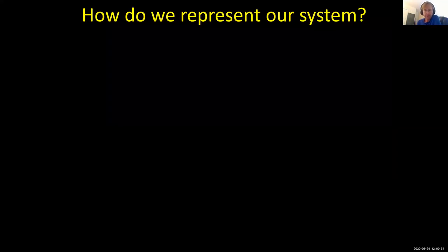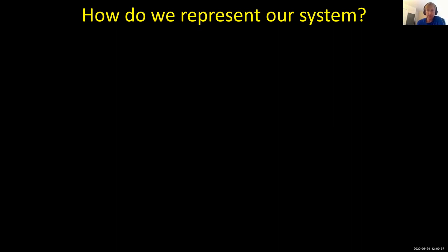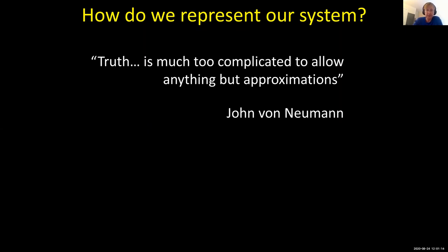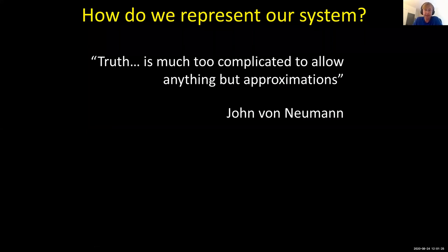How do we model a protein on the computer? The first thing we have to ask is how we're going to describe a molecule. We have to make some choices, and those choices aren't simple. There's a classic quote: 'truth is much too complicated to allow anything but approximations.' These systems are too large — too many atoms, too much going on — we can't do it in all the detail we'd like to. The flip side is 'all models are wrong, but some are useful.' We're going to make approximations but hope to still get a useful model.